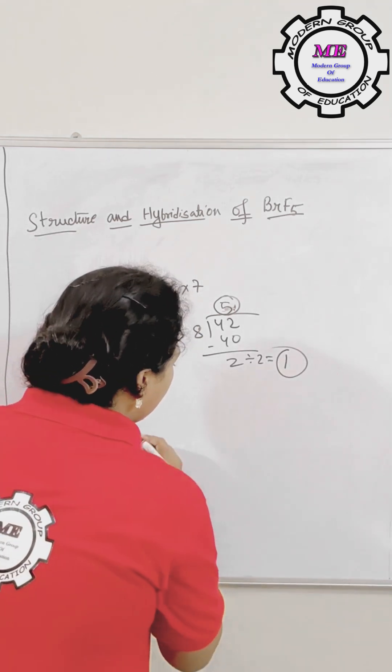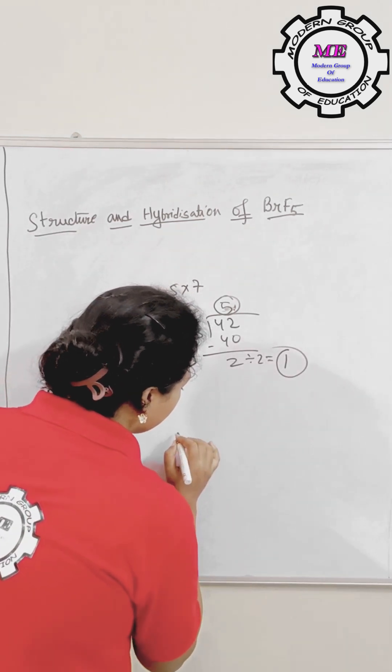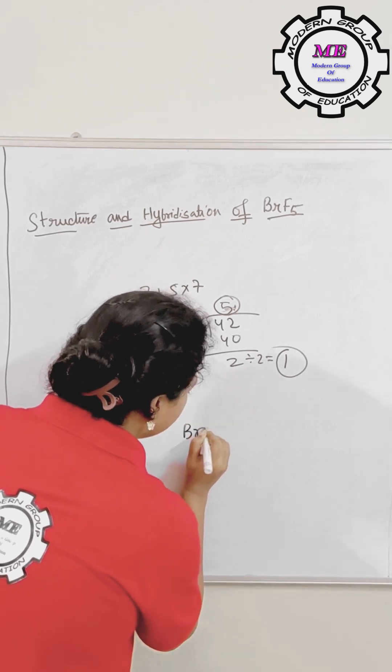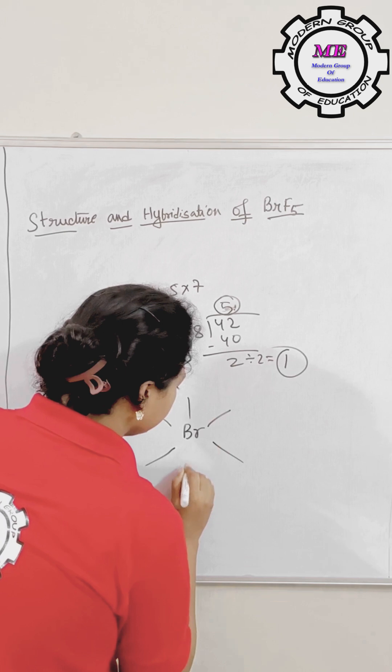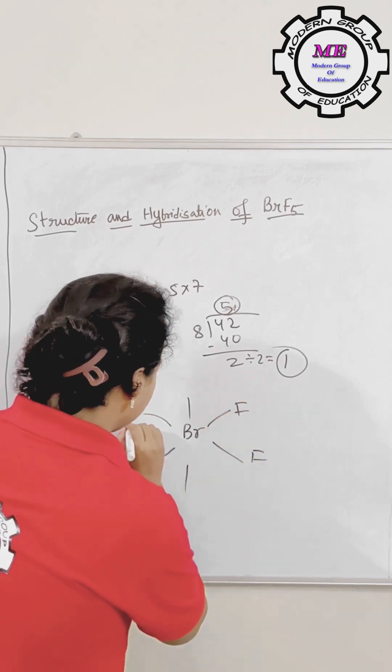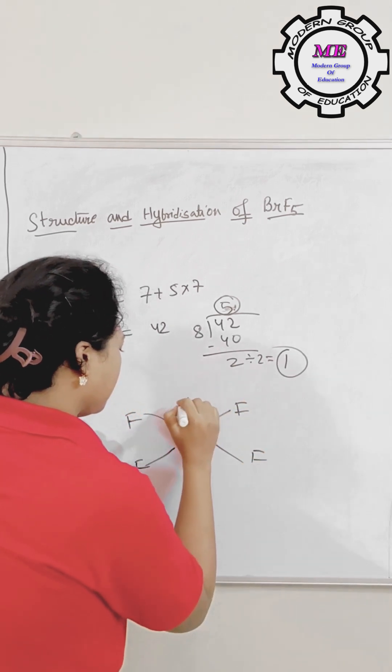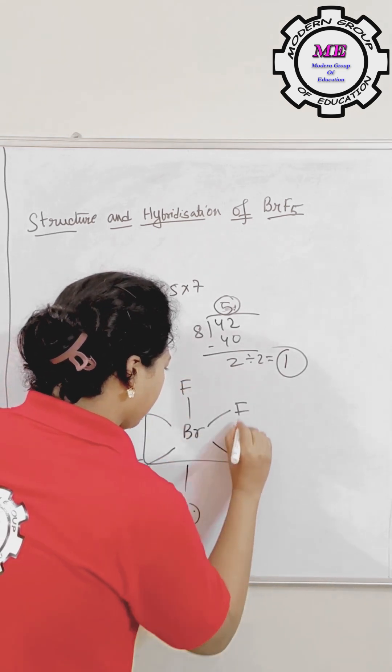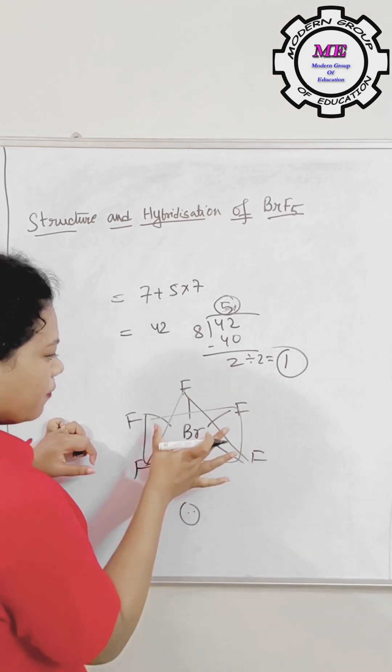We have SP3D2 as a hybridization and the structure will be octahedral. Octahedral structure. So we have BR in the middle. F I will place over here and only 1 lone pair is there. You can place over here and F is there. So you have to box it and this is square pyramid.